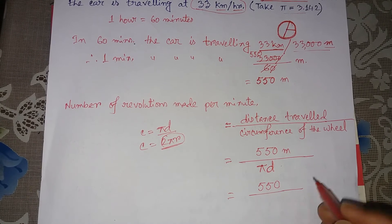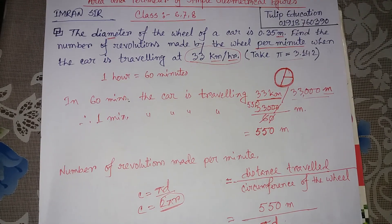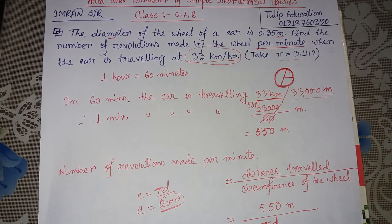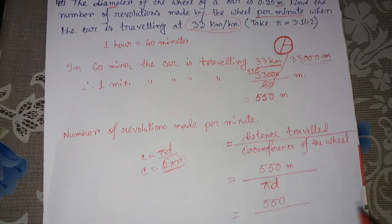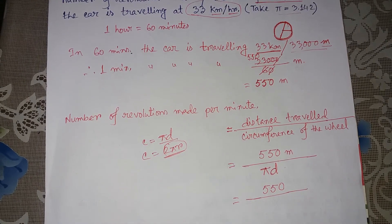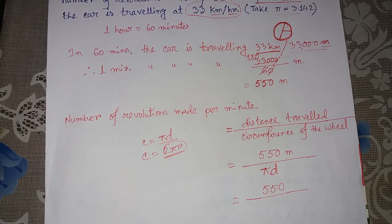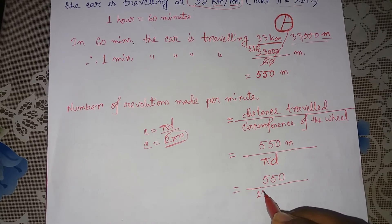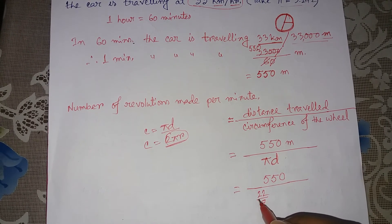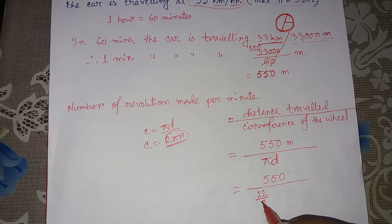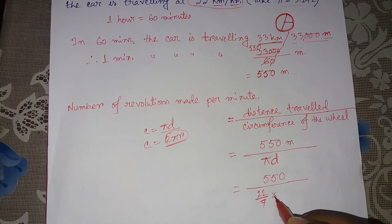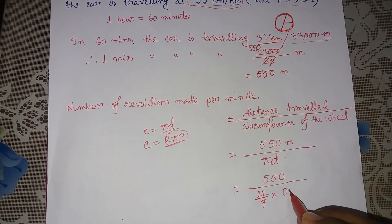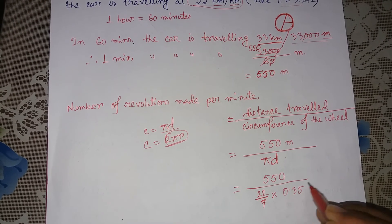For the pi value I will use 22 by 7, giving the exact value. The diameter value given is 0.35 meters.